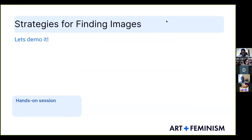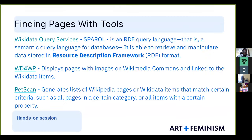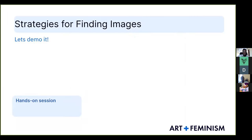I'm going to walk you through some of the strategies and tools you can use to find images on Wikimedia that are not on Wikipedia articles. Before I do that, I'd like to know if any of you have added any image to an article before, either on the Darban Wikipedia or English Wikipedia. Yes, Felice — okay great. There are different ways to add images to Wikipedia articles from Wikimedia Commons.